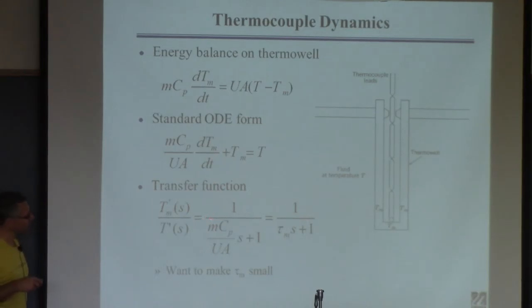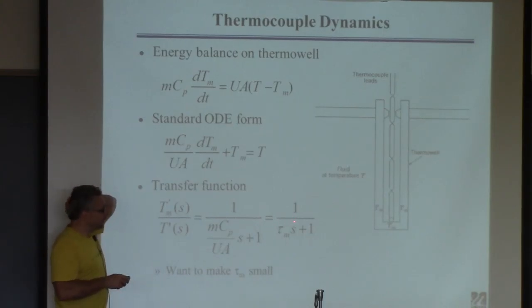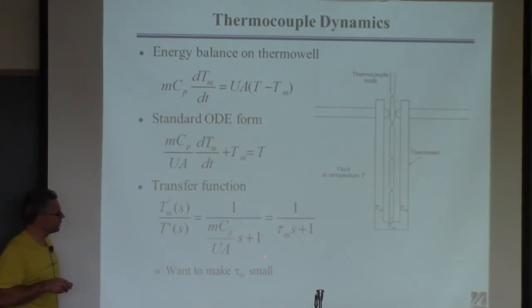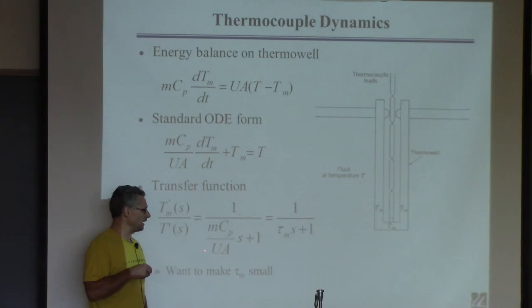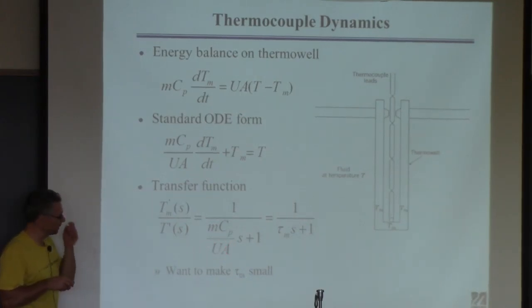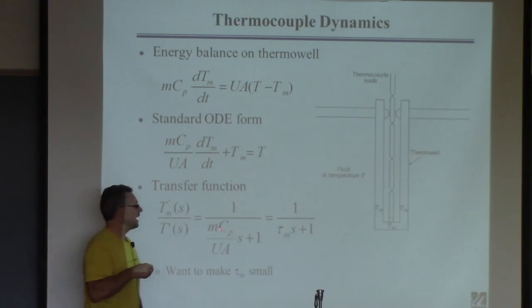So when you look at this time constant, we want it to be small. How can you make it small? Make the numerator smaller and the denominator big. How? Have high heat transfer and high heat transfer area. Both these things make a lot of heat transfer, making it fast. Have a low capacitance—if this material has a low heat capacity, that will also make it fast. And also if it's small with low mass. So this is a nice little bit of analysis.